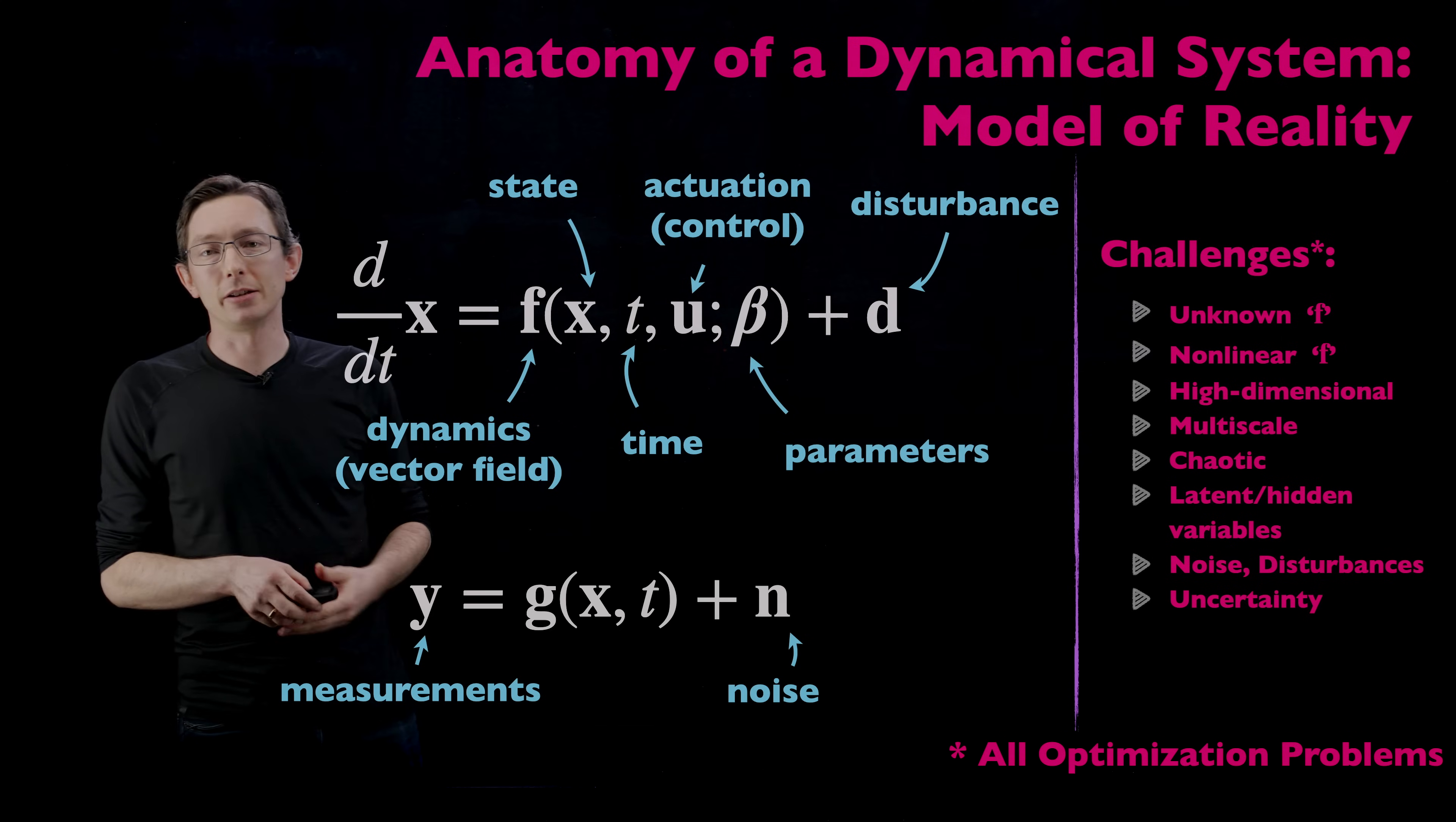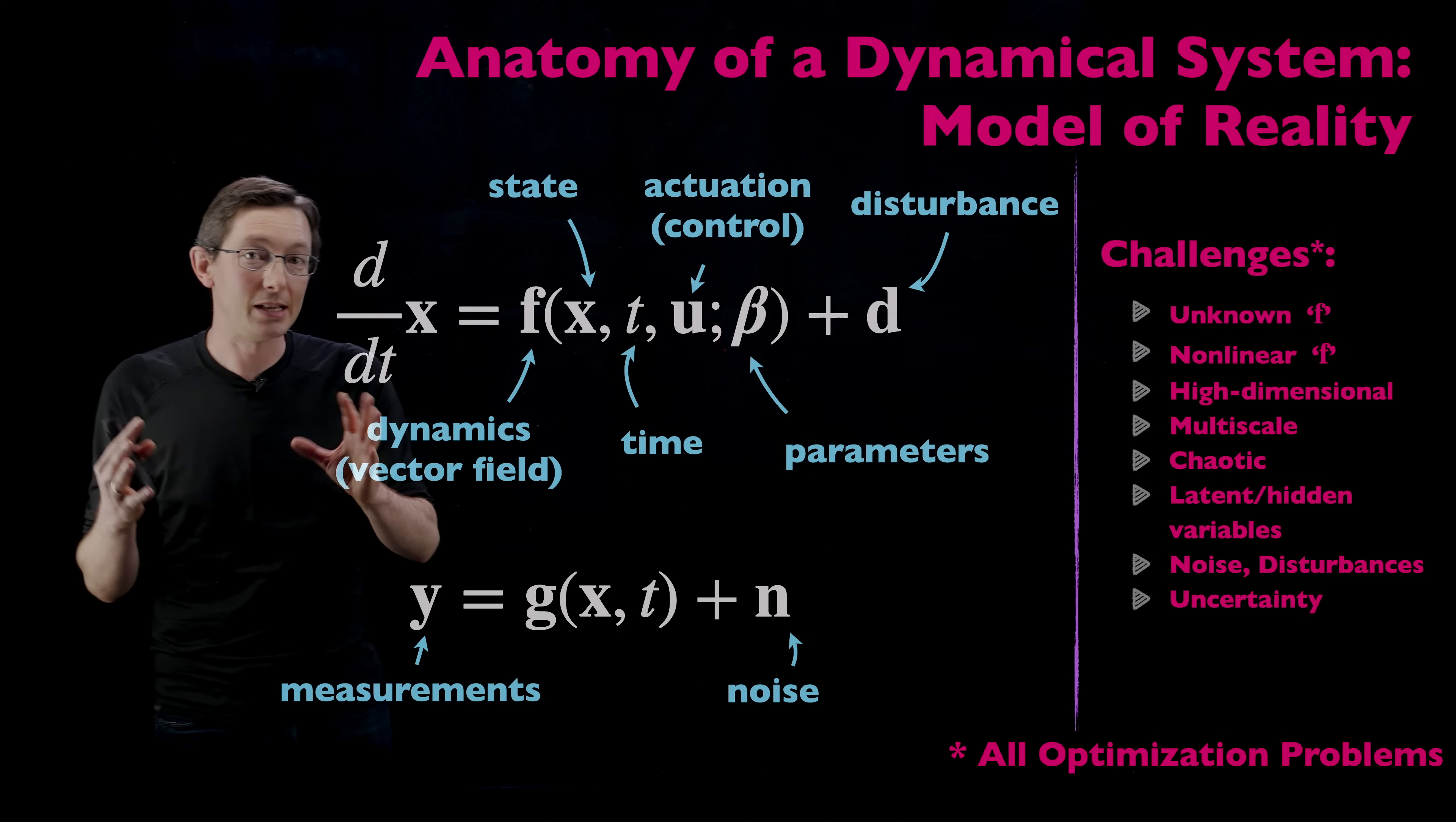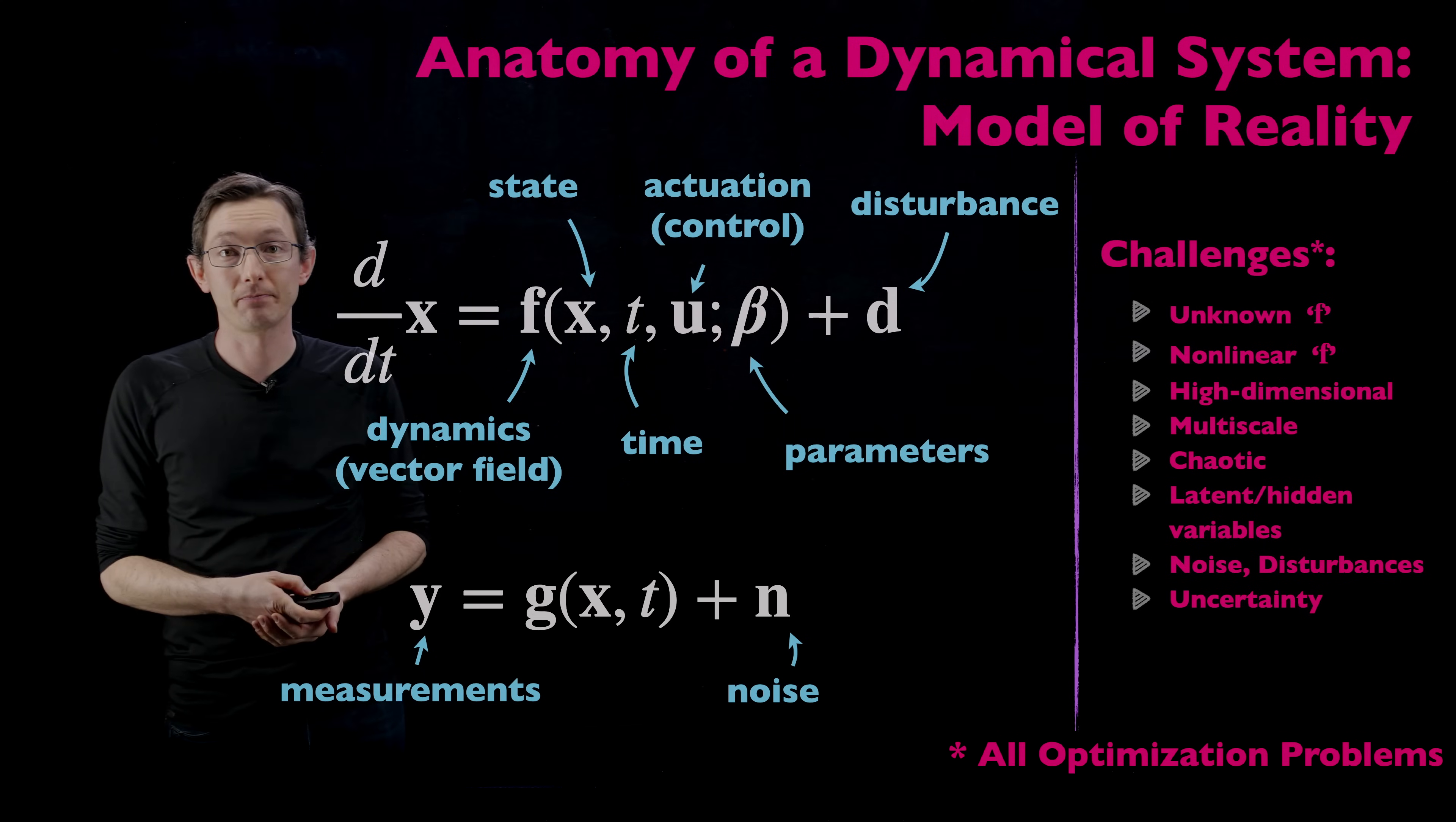I have an asterisk on the challenges because I want to point out that most of these problems can be recast as optimization problems. Optimally handling noise and disturbances for future predictions or estimation. Optimally propagating uncertainty in the future. Optimally reconstructing the full state from limited measurements Y. And when I say that this is an optimization problem you should be thinking now I can probably start using tools from machine learning. Because machine learning is just optimization based on data. It's building models using optimization and a wealth of data. And so this is really nice because modern dynamical systems, the anatomy of a dynamical system allows you to focus on individual tasks and challenges with these emerging optimization techniques.